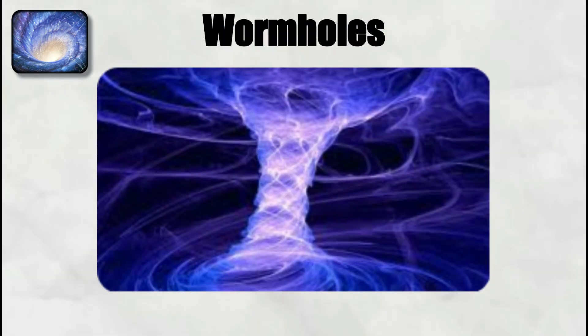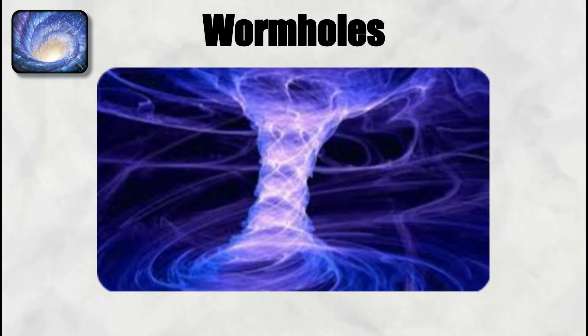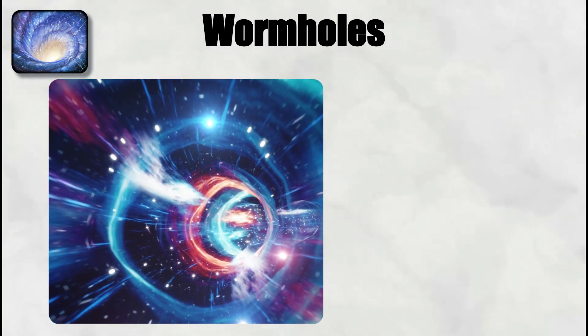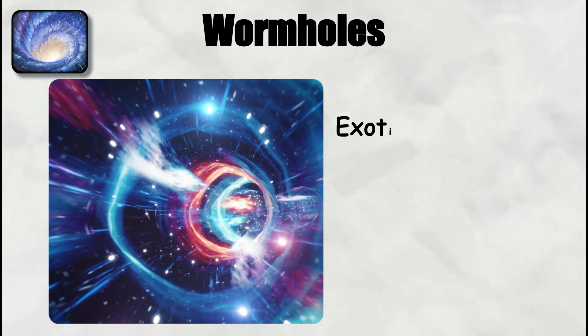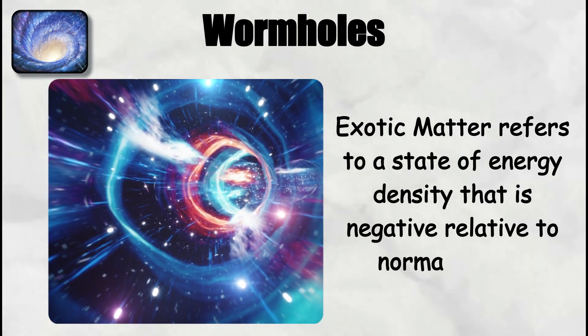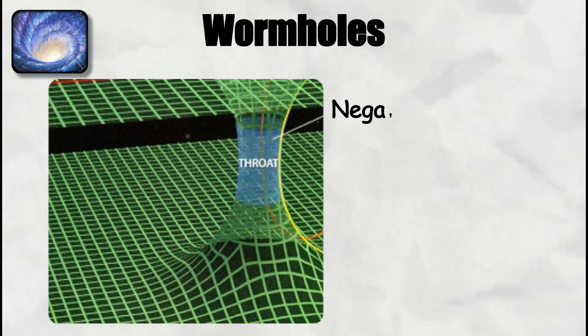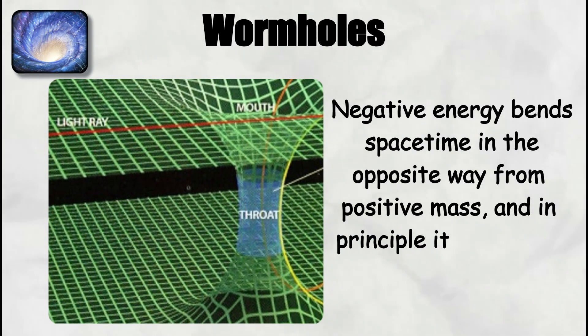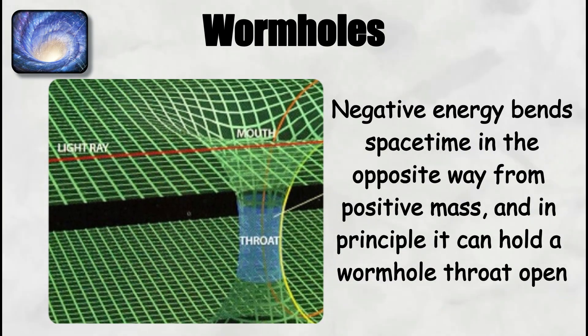To make a wormhole traversable, additional elements are required that go beyond classical general relativity. The main requirement is so-called exotic matter. Exotic matter refers to a state of energy density that is negative relative to normal vacuum. Negative energy bends spacetime in the opposite way from positive mass, and in principle, it can hold a wormhole throat open.